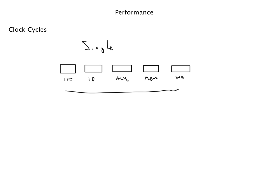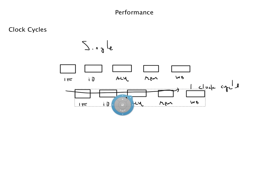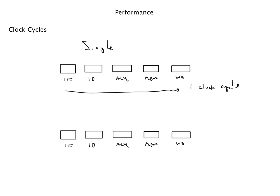In the single cycle case, going from the first stage all the way to the last stage is one clock cycle. We also have the pipeline, and in the pipeline each one of these stages is a clock cycle — clock cycle one, two, three, four, and five. So it depends on which type of architecture you're using: single cycle or pipeline.